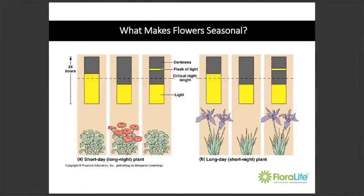So what makes flowers bloom at certain times of the year — in other words, what makes them seasonal? If you watched the last webinar on spring flowers, you'll remember that I talked about photoperiod and vernalization. Photoperiod is just a scientific way of saying day length — short days or long days — and vernalization is a scientific way of describing the period of cold temperatures that some plants require to trigger them to flower. Going back to photoperiod, it's not actually the amount of daylight a plant gets that triggers it to flower.